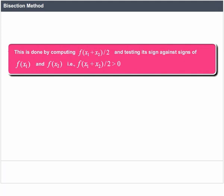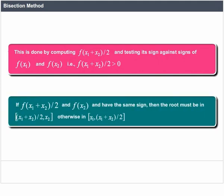This is done by computing f((x1 + x2) / 2) and testing its sign against the signs of f(x1) and f(x2). If f((x1 + x2) / 2) and f(x2) have the same sign, then the root must be in the closed interval [(x1 + x2) / 2, x2]. Otherwise, in the closed interval [x1, (x1 + x2) / 2].